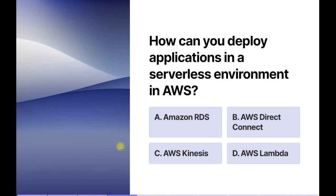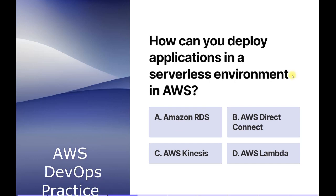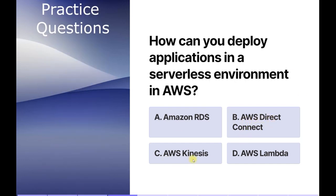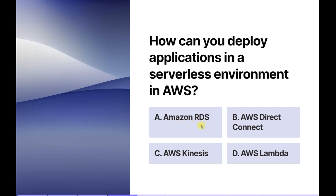In this question they are asking: how can you deploy applications in a serverless environment in AWS? The options are: Amazon RDS, AWS Direct Connect, AWS Kinesis service, and AWS Lambda service. Amazon RDS is a managed database service for relational databases like MySQL or PostgreSQL. AWS Direct Connect helps establish a dedicated connection between an on-premises environment and AWS cloud. AWS Kinesis is used for processing real-time streaming data at scale — it includes Kinesis Data Streams, Kinesis Data Firehose, and Kinesis Data Analytics.